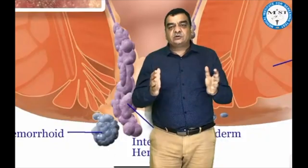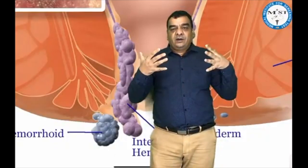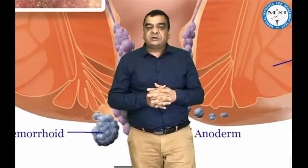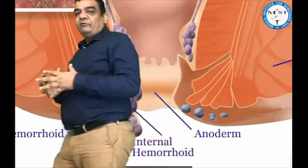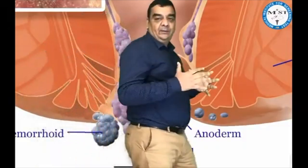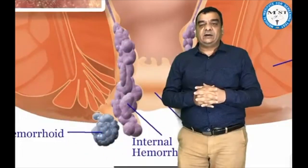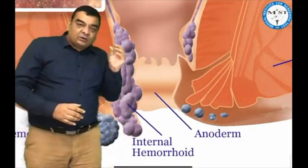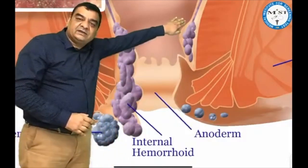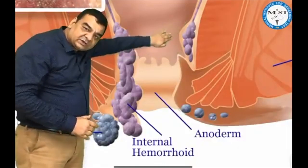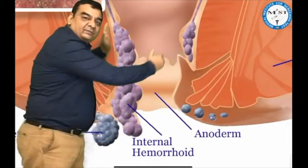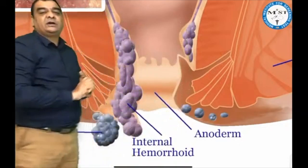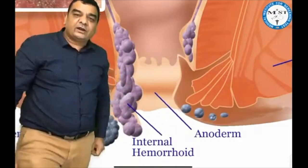The story of these hemorrhoids or rectal collapse is actually the story of more intra-abdominal pressure. Those individuals who remain constipated — during straining, the anal cushions start prolapsing down. If the anal cushions are prolapsing we call them hemorrhoids, but sometimes the entire rectal wall may start prolapsing, and that will be called a rectal prolapse.